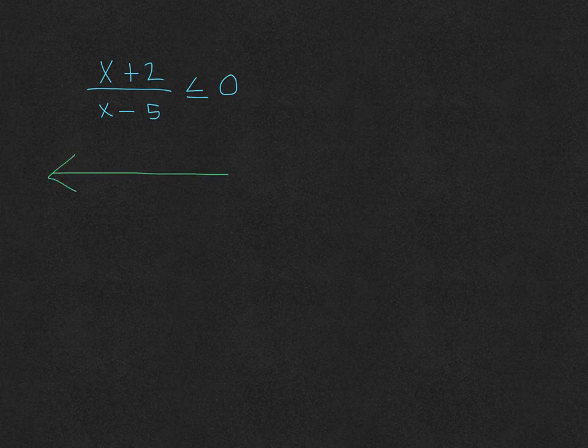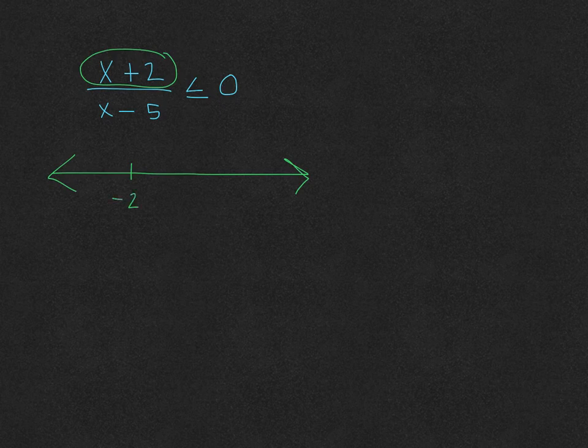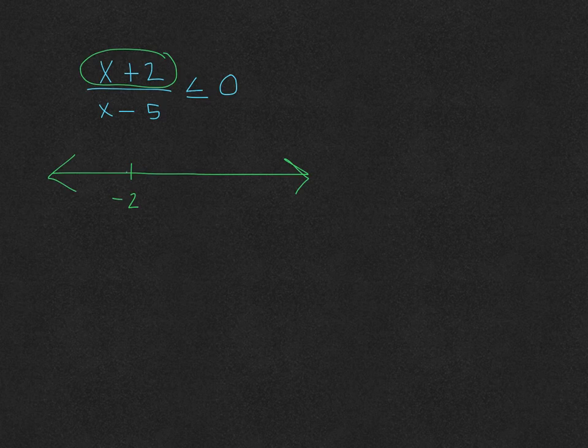So let's start off with the 0s of the numerator. So what makes x plus 2 equal to 0? That would be negative 2. And that sign is going to follow whatever my inequality sign is. If it's a less than, it would have been open. But since it's a less than or equal to, our circle is closed.